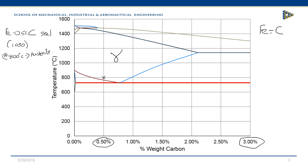Now, if I cool this further, let's say I get down to 728 degrees C. At 728 degrees, I've already moved into this region of the curve, and that region is ferrite and austenite. So at 728 degrees — just above the transformation temperature of 727 degrees C — I know I've got those phases, and I'm just above that transformation line.